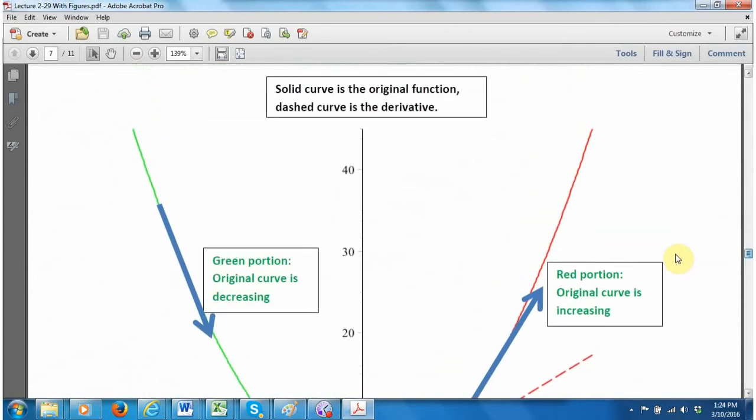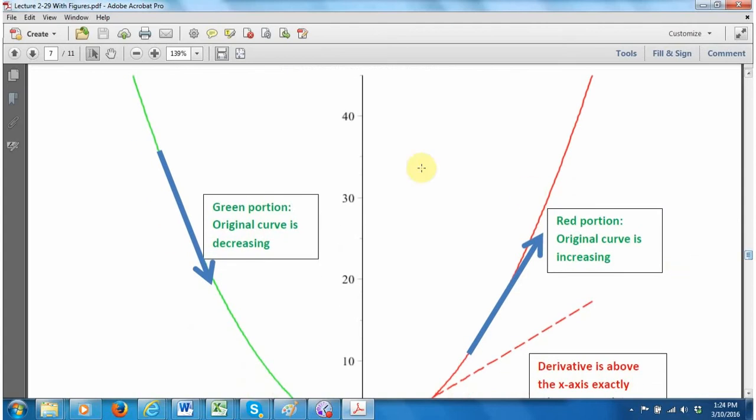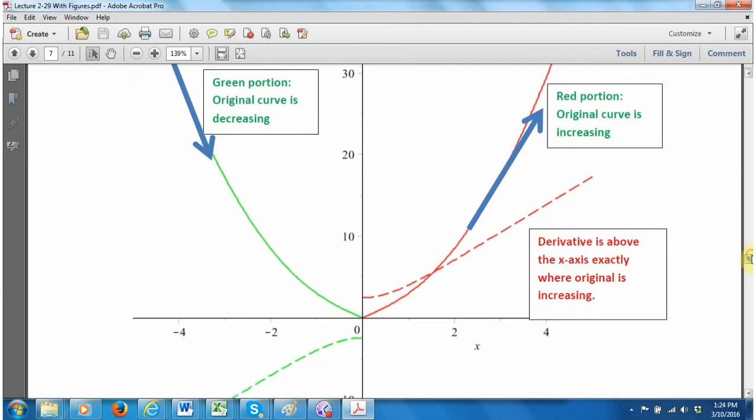The solid curve is the original function and the dashed curve is the derivative. I've color-coded everything so you can see the relationship. This green portion over here, the original curve is decreasing. I know the derivative is correct because the derivative, which is dashed, is below the x-axis, exactly in the portion where the original curve is decreasing.